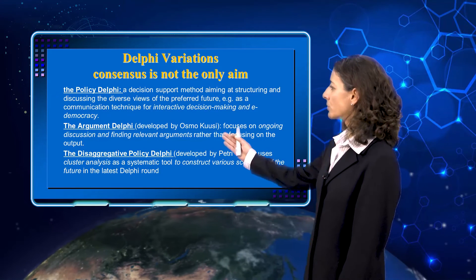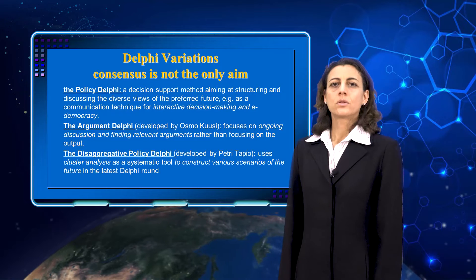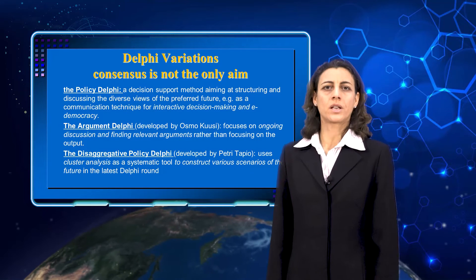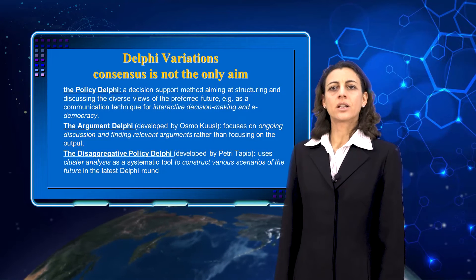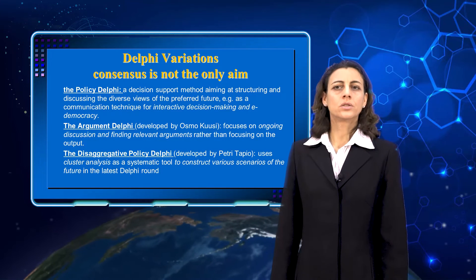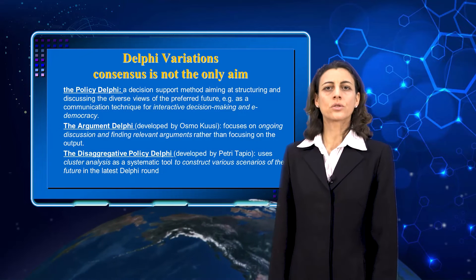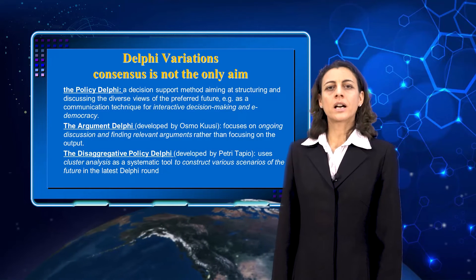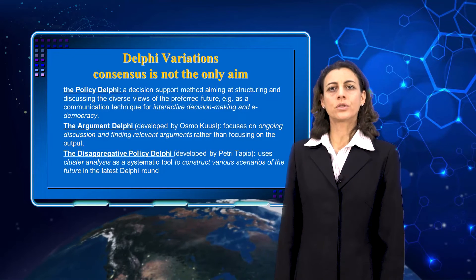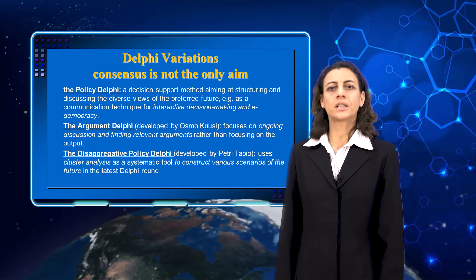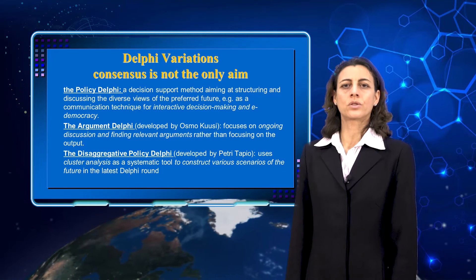The second approach is called the Argument Delphi, developed by Osmo Koussi. It's called the Argument Delphi because the goal is not focused on reaching a particular output or consensus, but rather to force the experts to brainstorm on different ideas about the future, identify different arguments, and consolidate them into a list of different forecasts for the future.